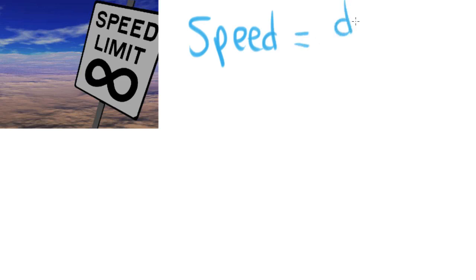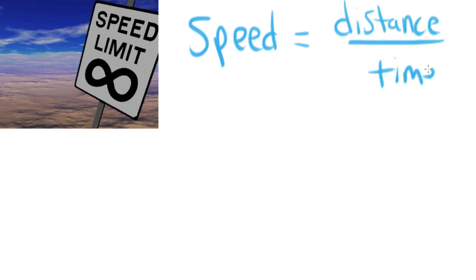Now we can use distance and displacement and look at how they apply to motion. Our first term here is speed. Speed is the distance traveled by a moving object over a period of time, so speed equals distance divided by time. Since we're using distance, speed is also a scalar quantity — it only has a numeric value, only has magnitude, and has no direction.